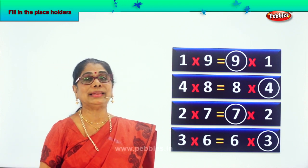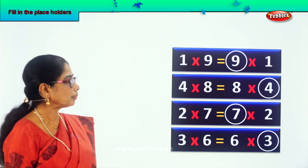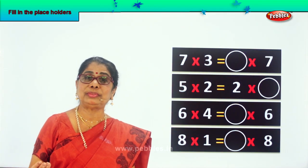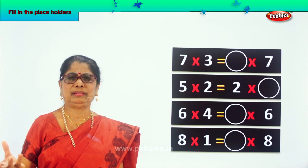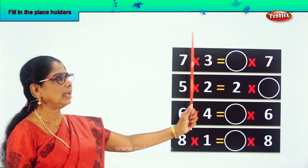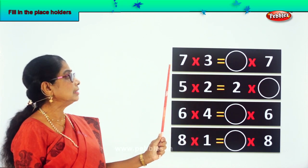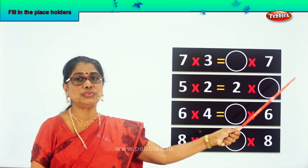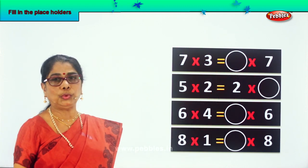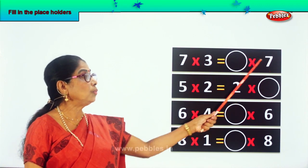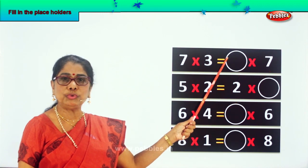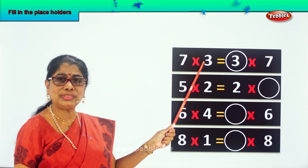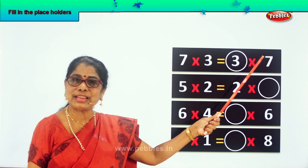Let's look at another sum. Look. 7 into 3. What is 7 into 3? 21. Now we have to get the same answer on the other side. 7 into 3 is equal to dash into 7. How to get 21? What number into 7 will give you 21? 3 only. Look carefully. 7 into 3 is equal to 3 into 7.